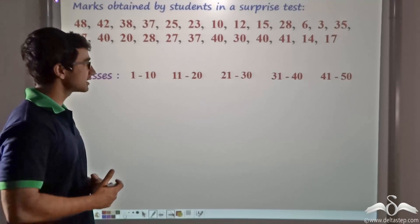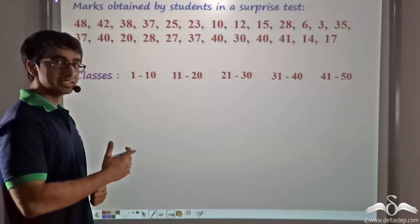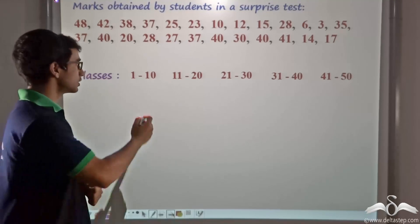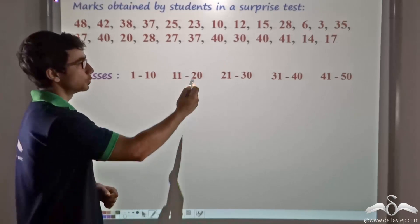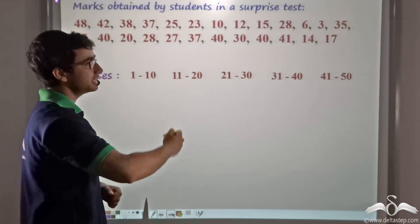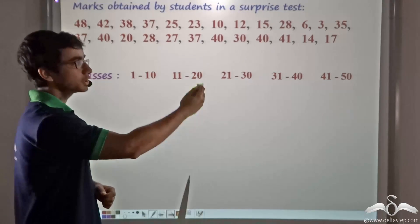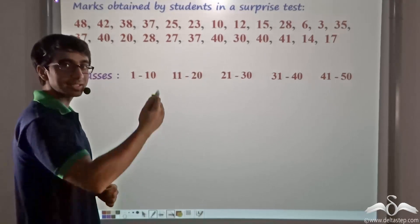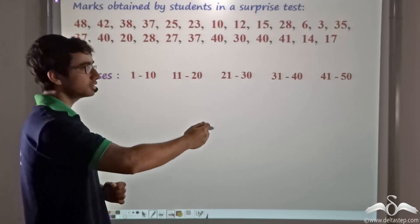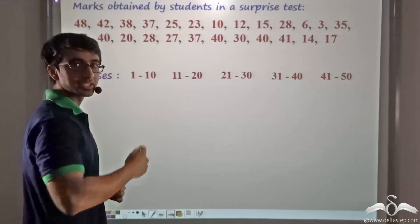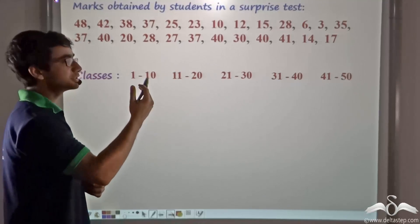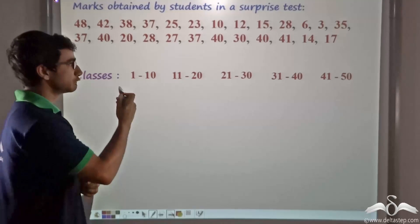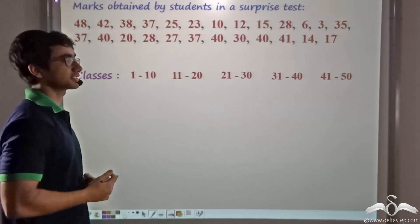What are these classes? These classes are 1 to 10, 11 to 20, 21 to 30, 31 to 40, and then 41 to 50. So data has been grouped under five classes.